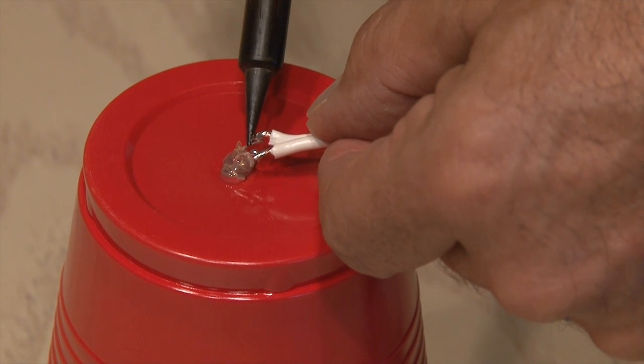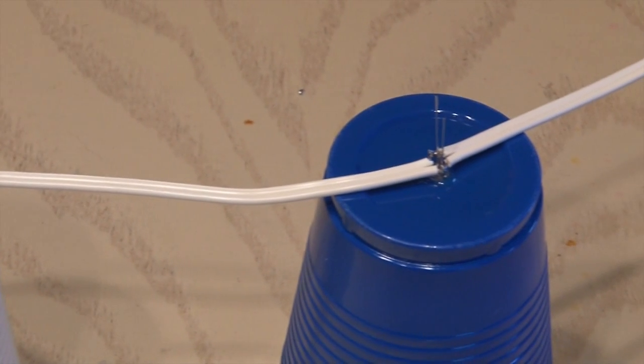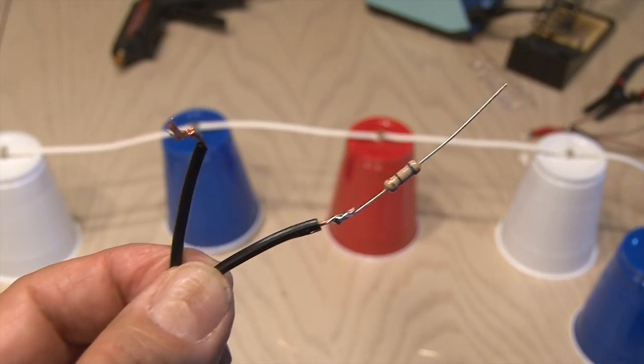I'll start soldering the wires to the LEDs. Since I'm wiring this in parallel, all the positive leads will be joined together, and all the negative leads will be joined together. We're almost done.